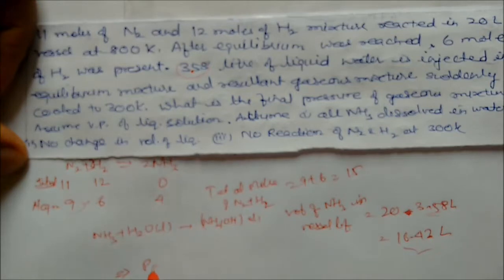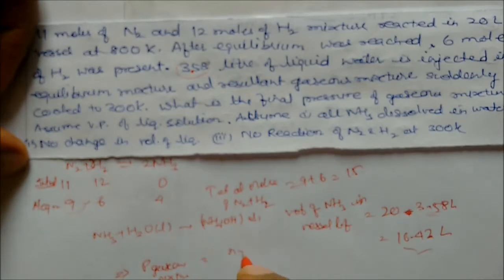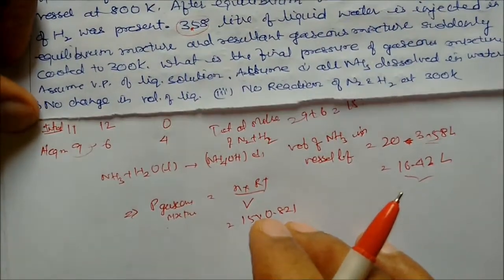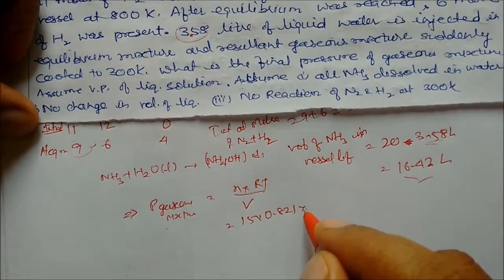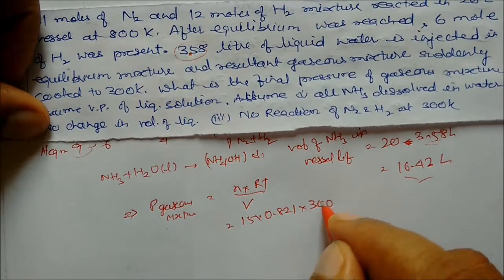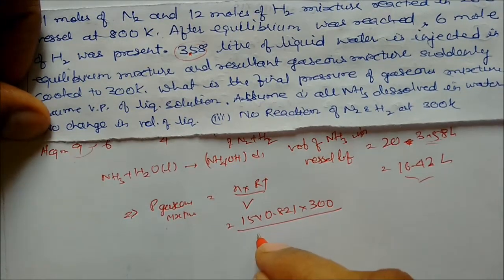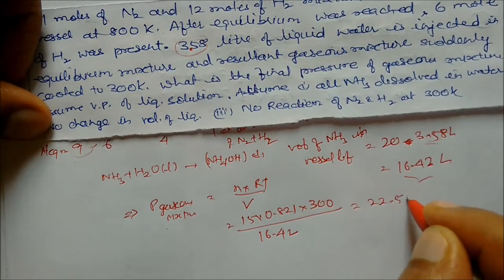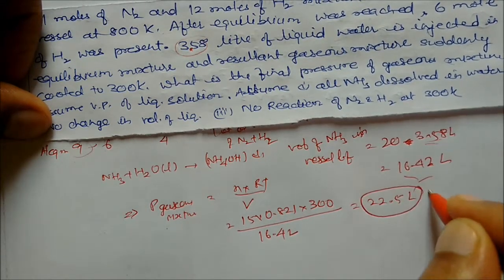Pressure of gaseous mixture: P = nRT/V. Here n = 15 moles (N₂ and H₂ only), R = 0.0821, T = 300 K, V = 16.5 liters. On solving, we get approximately 22.5 atm as the final pressure.